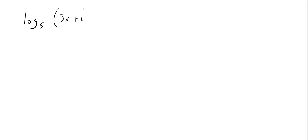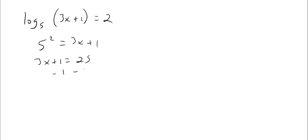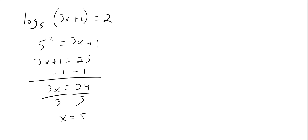Log base five of (three x plus one) equals two. So five to the second power equals three x plus one. Five squared is 25, subtract one: three x equals 24, divide by three: x equals eight. Pretty easy.